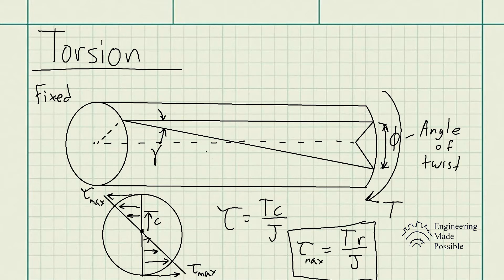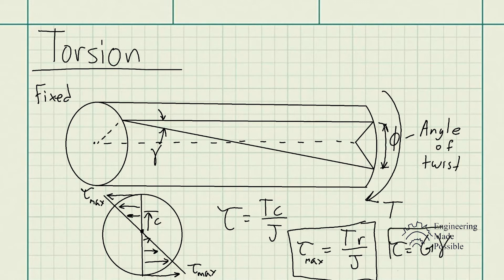Similarly to Hooke's law, we have Hooke's law for shear stress, which relates the shear stress and the shear strain. The shear stress is equivalent to the shear modulus G times the shear strain. This is another useful relationship. Let's go ahead and do an example.